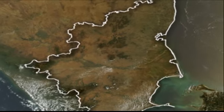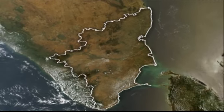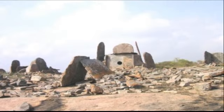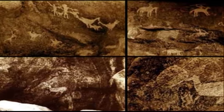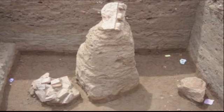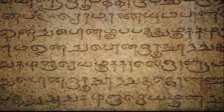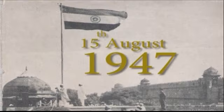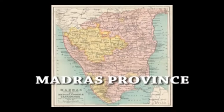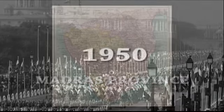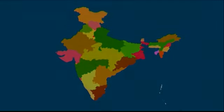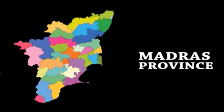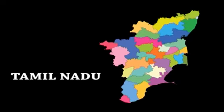The state of Tamil Nadu in modern India has been under continuous human habitation since prehistoric times. The history of Tamil Nadu and the civilization of the native people are among the oldest in the world, dating back to 500 BCE. Since 15th August 1947, the state was known as Madras Province. In 1950, it attained separate statehood. During 1969, Madras Province was renamed as Tamil Nadu.